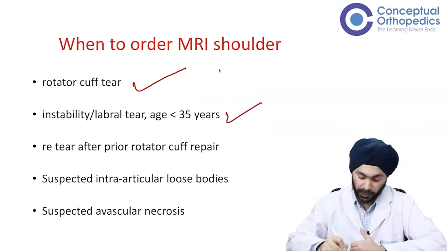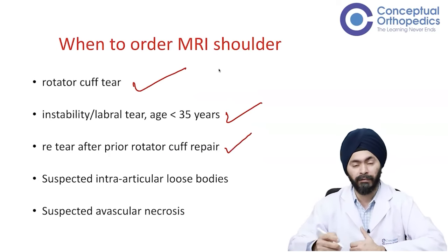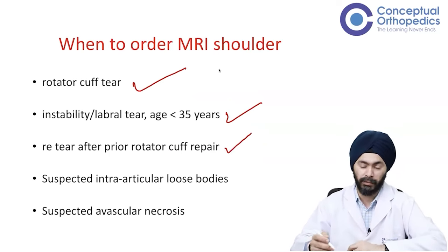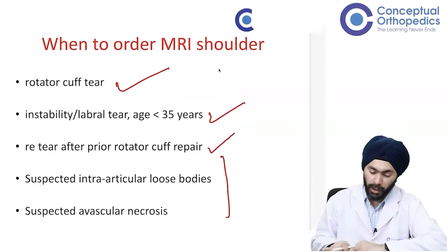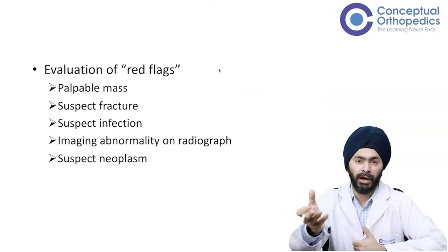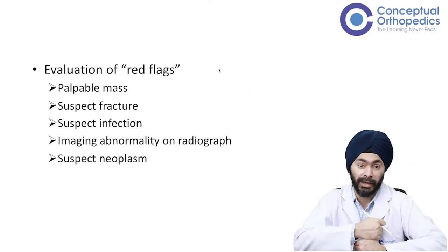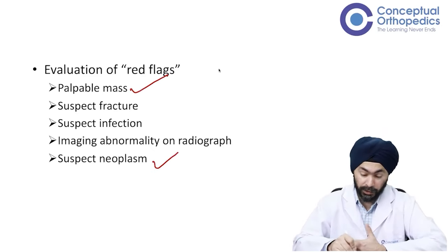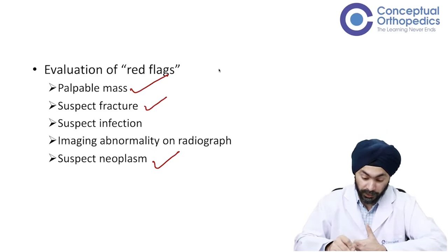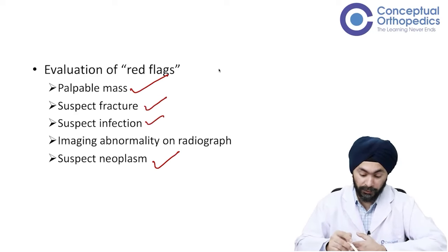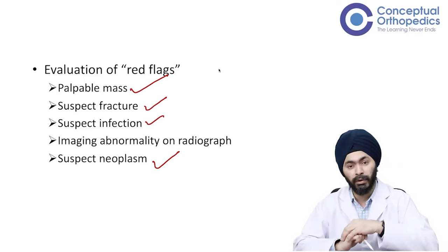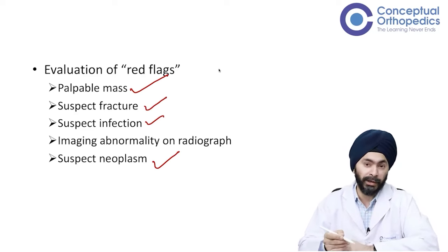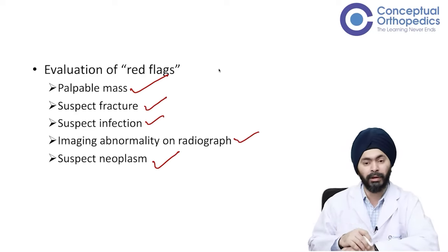Other conditions can be when you suspect a re-tear after a cuff repair, or when you're suspecting intra-articular loose bodies, or suspecting avascular necrosis. Rare indications are when you require evaluation of red flag signs like a suspected palpable mass, suspected neoplasm, suspected fracture not seen on an x-ray, infection, or when you see some abnormality on an x-ray and want further evaluation on a better investigation.